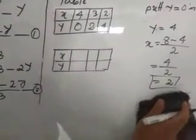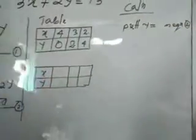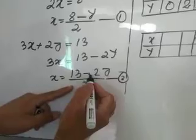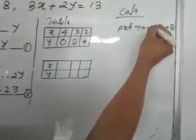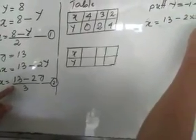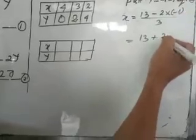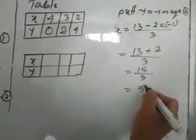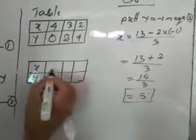Now we are going to do table 2. Looking at equation 2: X equal to 13 minus 2Y divided by 3. Let's take Y equal to minus 1. Then X equal to 13 minus 2 into minus 1, divided by 3. Minus times minus is plus, so 13 plus 2 is 15. 15 divided by 3 is 5. When we take Y as minus 1, X is 5.